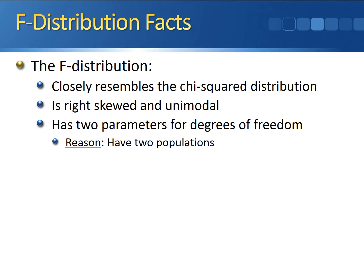The reason is we're working with two populations. What you'll eventually see is that the F-statistics are ratios, so one parameter is used with the numerator and the other parameter for the degrees of freedom is used for the denominator.